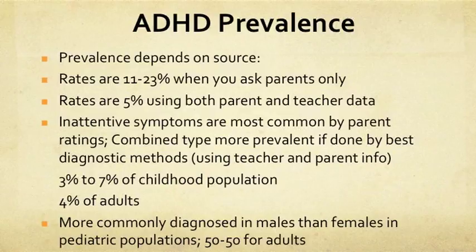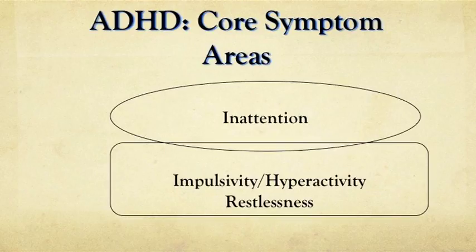Overall, we're talking about 3% to 7% of the childhood population and about 4% of the adult population. It's more commonly diagnosed in males than females in the pediatric population, but about 50-50 once we reach adulthood. The core symptom areas include inattention, overlapping with or present alongside impulsivity, hyperactivity, and restlessness.